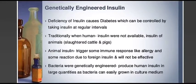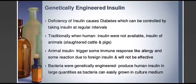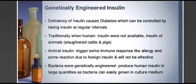The first example is genetically engineered insulin. Deficiency of insulin causes diabetes, which can be controlled by taking insulin at regular intervals. Traditionally, insulin was extracted by slaughtering animals like cattle and pigs, which is very inhuman. Also, animal insulin could trigger many immune responses like allergies and reactions due to foreign insulin and was not very effective. Therefore, biotechnology was used to genetically engineer bacteria to produce human insulin in large quantities, as bacteria can easily be grown in culture medium.